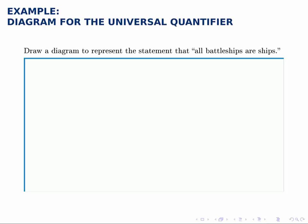Draw a diagram to represent the statement that all battleships are ships. This is an example of a quantified statement. We call it a quantified statement because we see that word 'all,' which quantifies our statement, limiting it to battleships. We're saying something about all battleships.